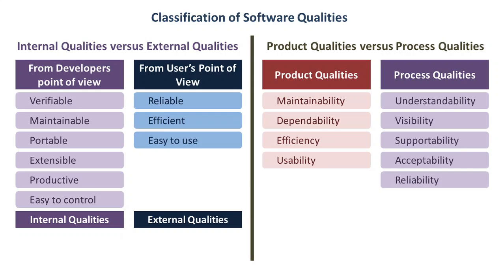Reliability is the probability of failure-free software operation for a specified period of time in a specified environment — meaning the software will give the correct output within a given time period. Robustness is the ability of a computer system to cope with errors during execution and cope with erroneous input — meaning the software's ability to handle faults and bad input is tested.